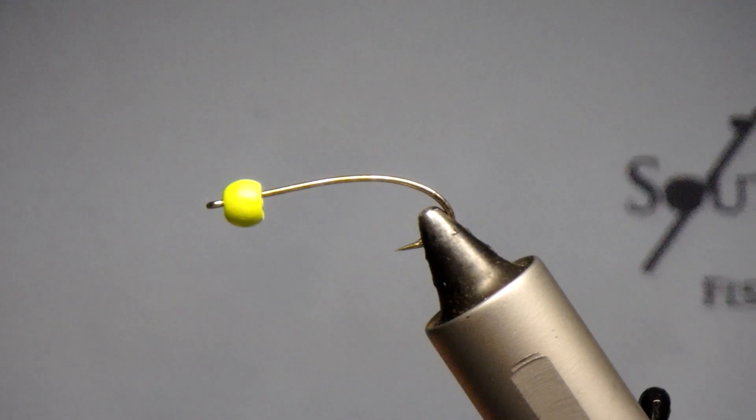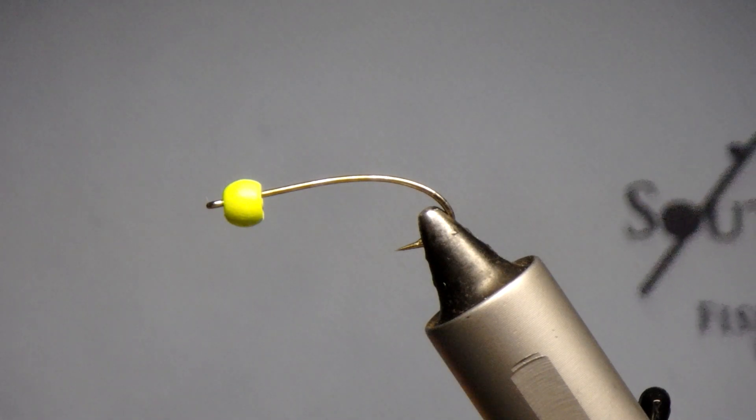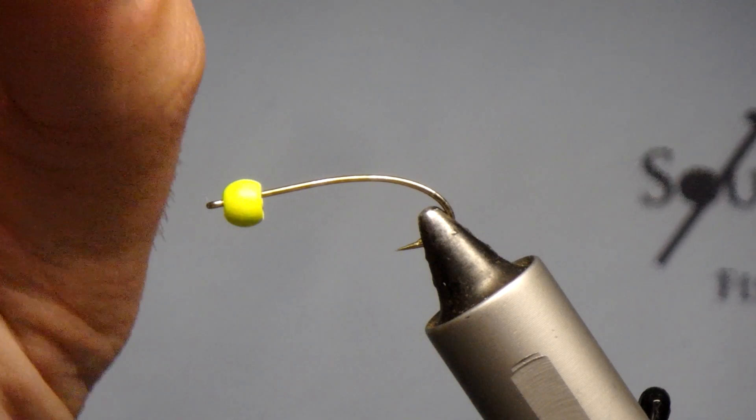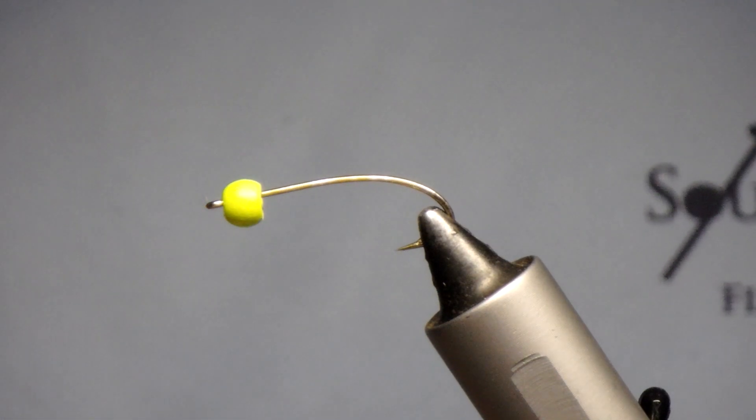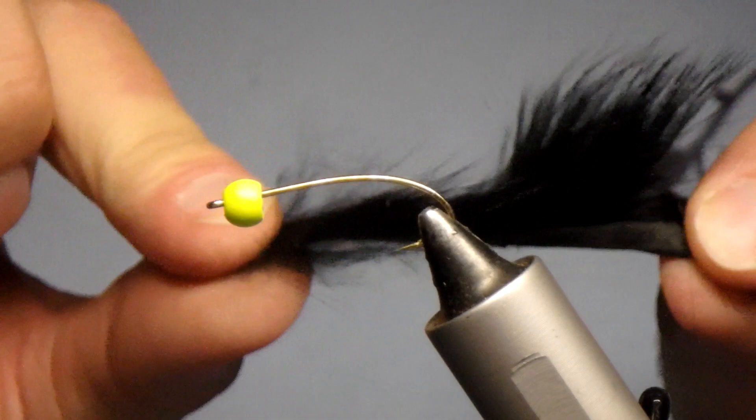So the materials you'll need for this pattern are thread in the corresponding color, I'm going to tie a black one here, I'm going to be using some lead wire in 25,000th size and of course you're going to need a zonker strip.